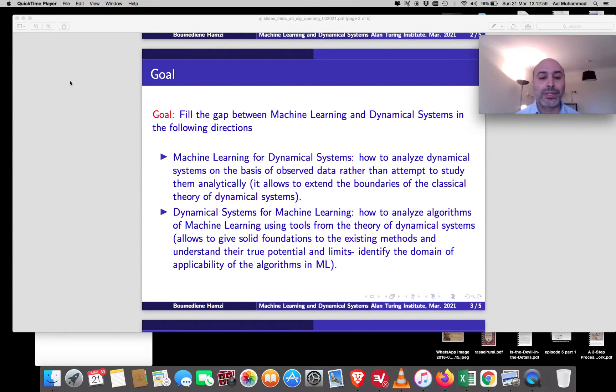And the other direction is dynamical systems for machine learning where the goal is to analyze algorithms of machine learning using tools from the theory of dynamical systems where algorithms are viewed as dynamical systems and here time for algorithms is not exactly the time of the watch but the time on the computer. This would allow to give solid foundations to the existing methods and understand their true potential and limits with the ultimate goal of identifying the domain of applicability of the algorithms in machine learning.